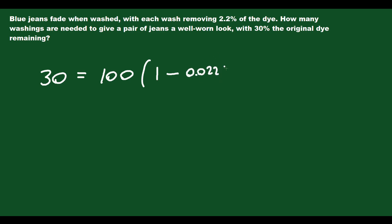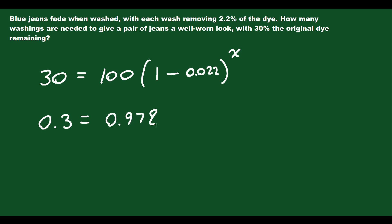Very similar setup to a population or investment question. Solve for x: divide both sides by 100 to get 0.3 equals 0.978 to the x. Now solve for x by taking the log of both sides: log of 0.3 equals log of 0.978 to the x.